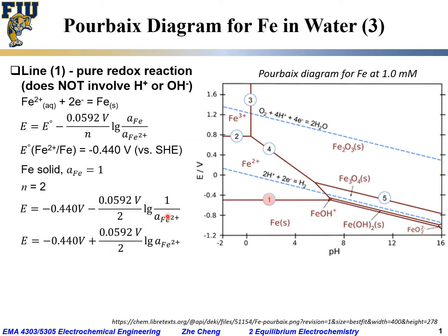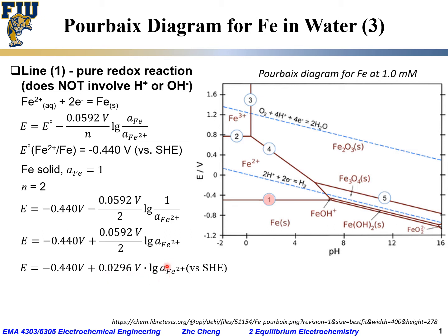The minus sign and the activity for iron in the denominator within the log — the two minuses cancel out. This gives us the electrode potential versus SHE as: −0.440 volt plus 0.0296 volt times the log (base 10) of the activity of Fe²⁺.